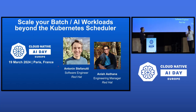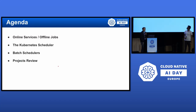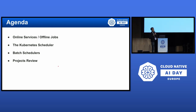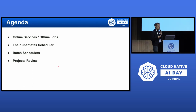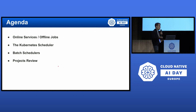For today's agenda, we'll start by briefly talking about the key characteristics that differentiate offline jobs from online services. We'll then take an example and see how those characteristics make it challenging to scale the execution of batch jobs on Kubernetes using the default Kubernetes scheduler. We'll then review the different classes of batch scheduler projects that have emerged in the ecosystem to solve those challenges, and go over some of these projects in more detail.